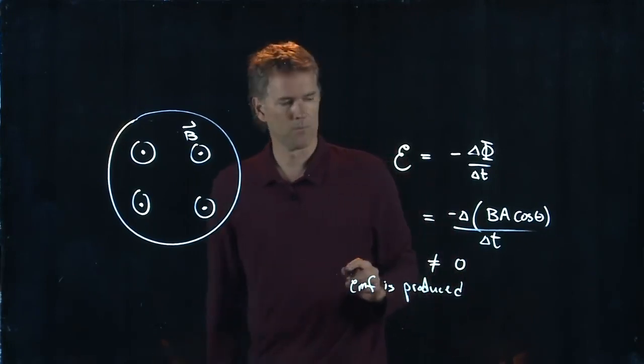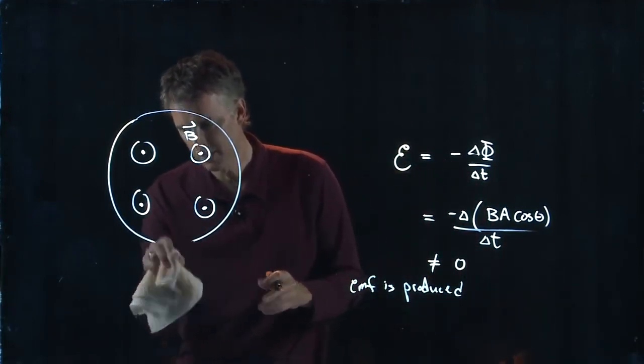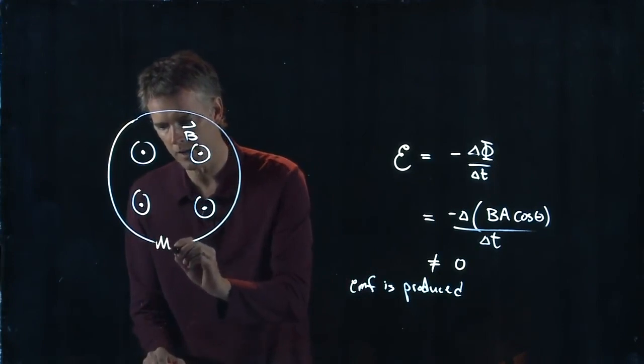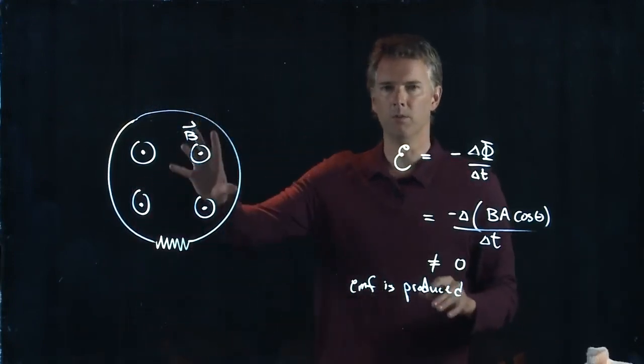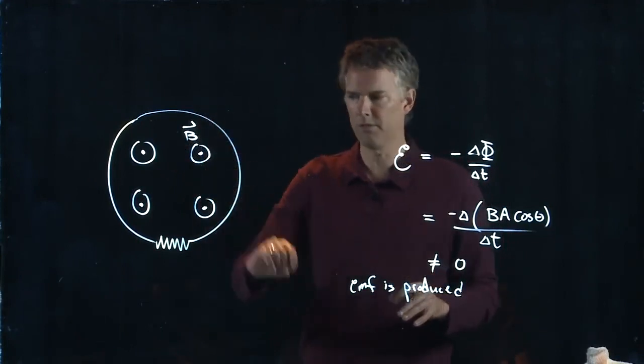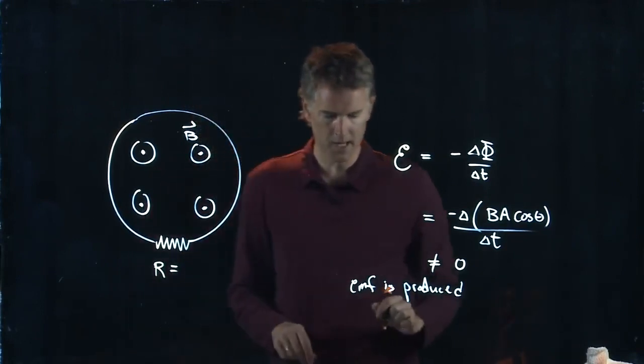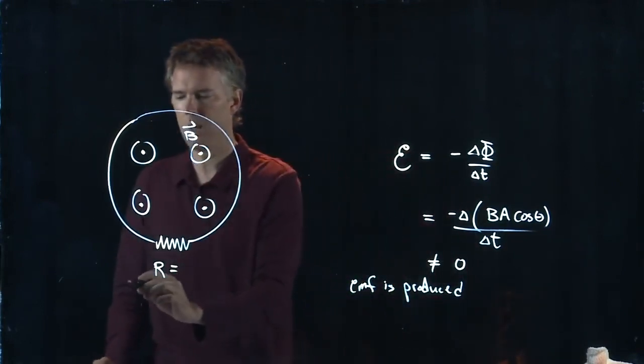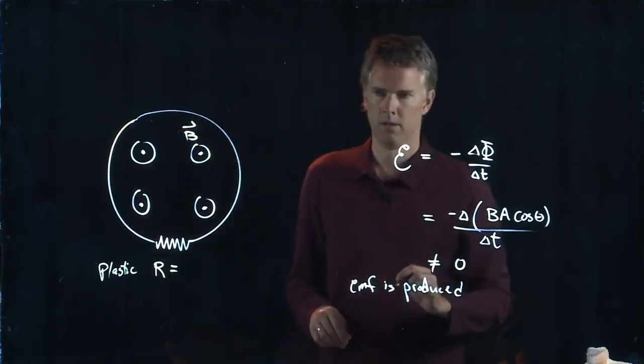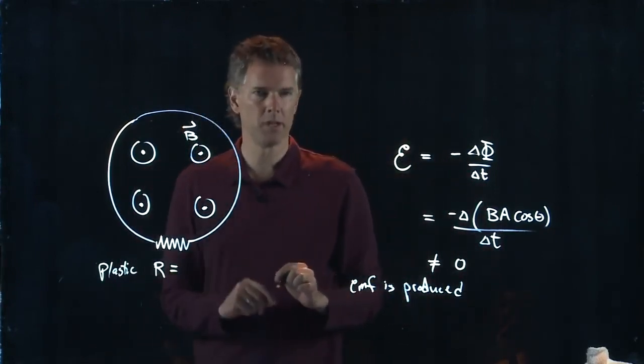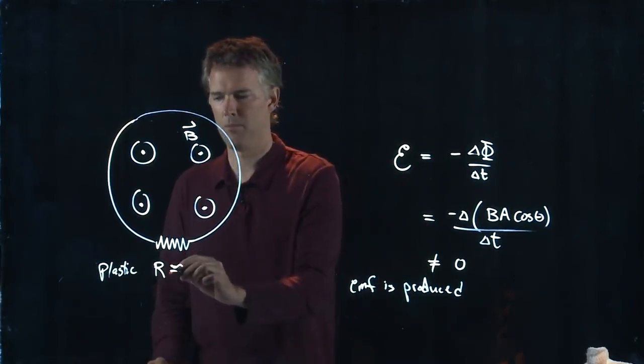Now what we said was EMF being produced means that there will be a current generated in this loop. But you can think of this loop as composed of metal and a resistor. And what they tell us is that it is a non-conducting plastic hoop. So if it's plastic, what is R? Approximately.